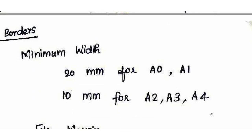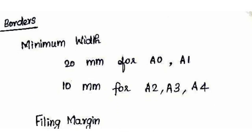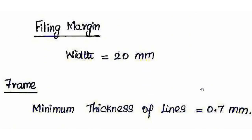Next are borders. The minimum border width as per SP 46 code is 20 mm for A0 and A1 sheets, and 10 mm for A2, A3, and A4 sheets. This is an important objective. The filing margin is 20 mm and is located on the left side for filing purposes.